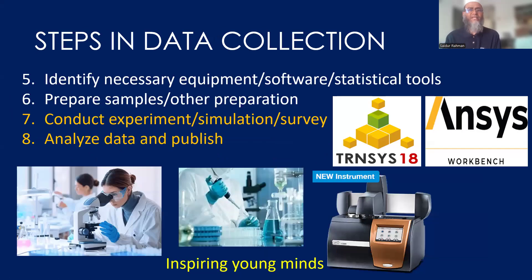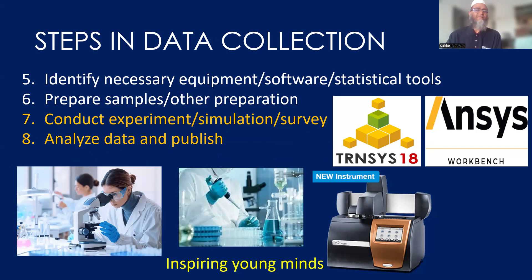These are the second steps in collecting data. Once you have identified necessary chemicals, materials, and reagents, you need to identify necessary equipment, software, statistical tools, and computational tools. When you study the methodology section of a journal paper, conference paper, or thesis, you can see what type of equipment they have used — for example, TGA, DSC, thermal conductivity meter, software such as ANSYS, TRNSYS, SPSS, MATLAB, and other statistical tools. You read the literature and identify the necessary equipment. If not available in your lab, you can identify them from other sources.